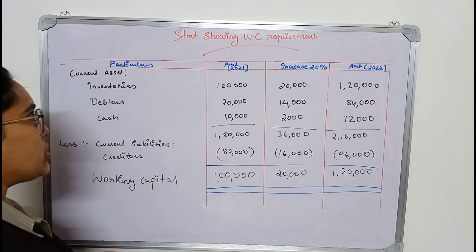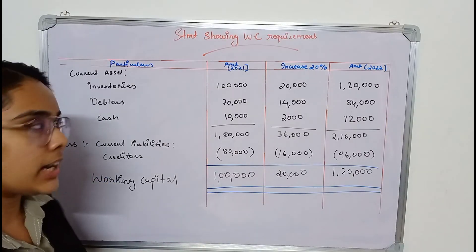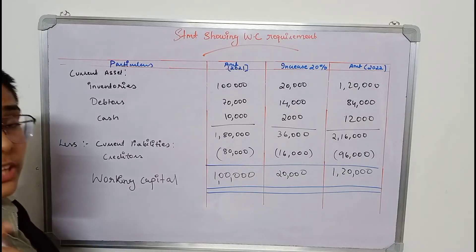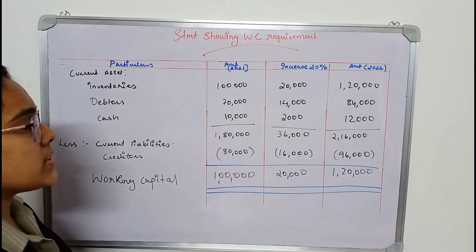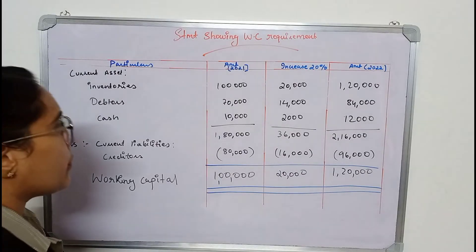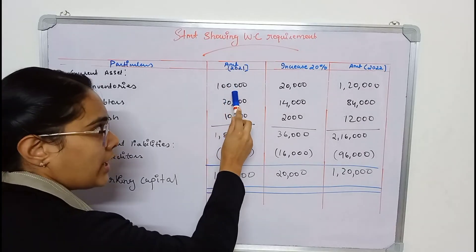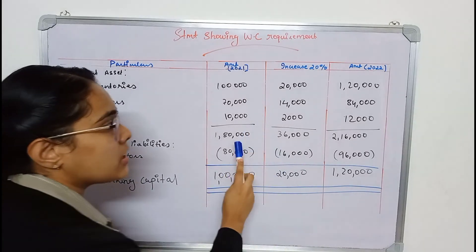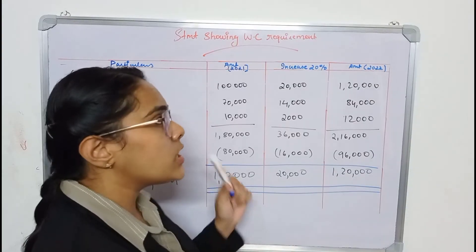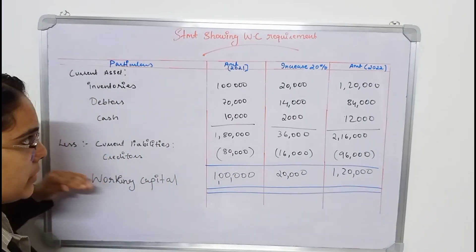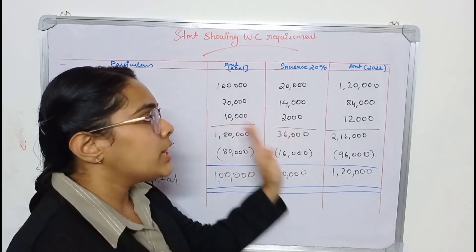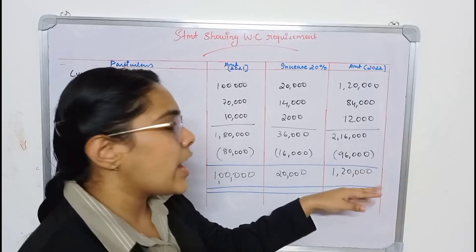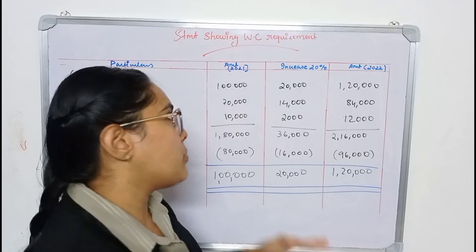In the previous balance sheet, current assets include inventories, debtors, and cash; and current liabilities had only one item — creditors. I have provided three amount columns: one for the previous year (2021), one for the 20% increase on each item individually, and a final column for the current year (2022) estimated amounts — which is where we will get the estimate of working capital required.